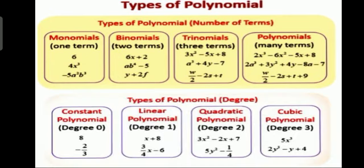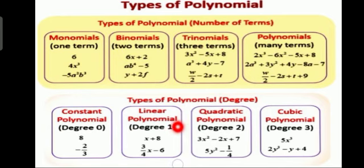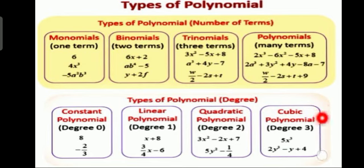Here are some examples of types of polynomials related to degree. A constant polynomial has degree equal to zero — no variable is present. A linear polynomial has degree one, like x + 8, where x has a power of one. A quadratic polynomial has the highest degree of 2, like 3x² − 2x + 7. A cubic polynomial has the highest degree of 3, like 5x³ or 2y³ − y + 4.